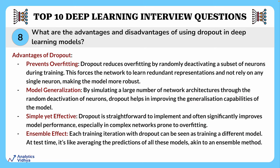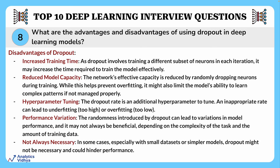The advantages of dropout include: it prevents overfitting by randomly deactivating a subset of neurons during training; it improves the model's generalization capabilities; it increases model performance especially in complex networks prone to overfitting; and each training iteration with dropout can be seen as training a different model — at test time it is like averaging the predictions of all these models, akin to an ensemble model.